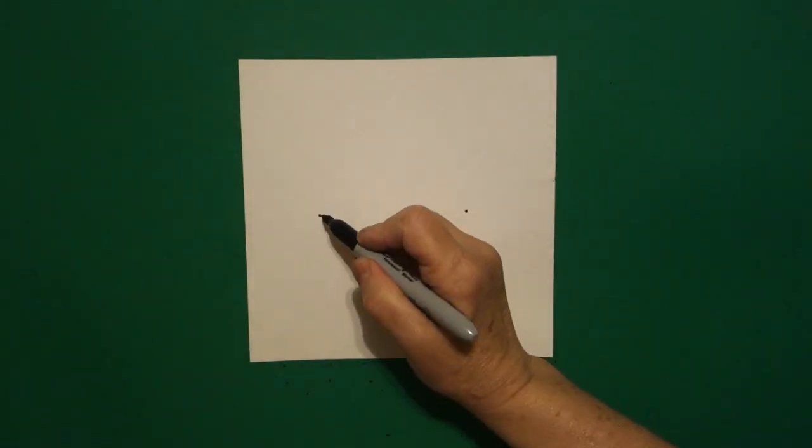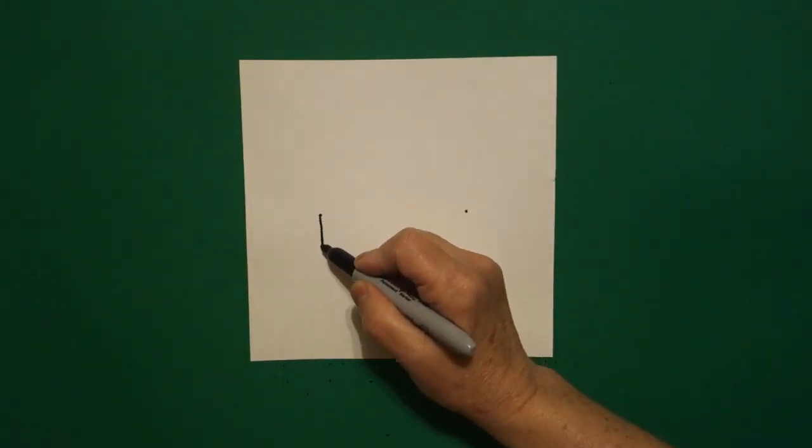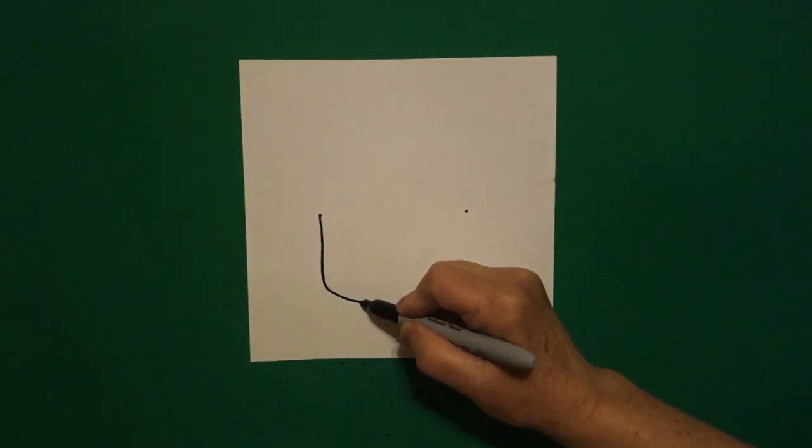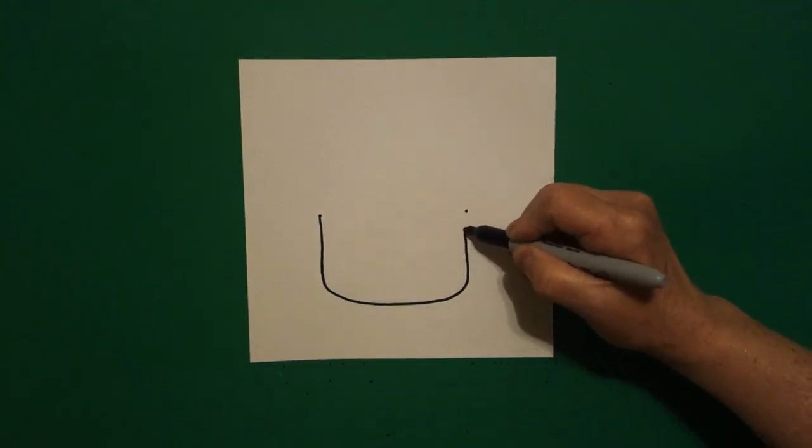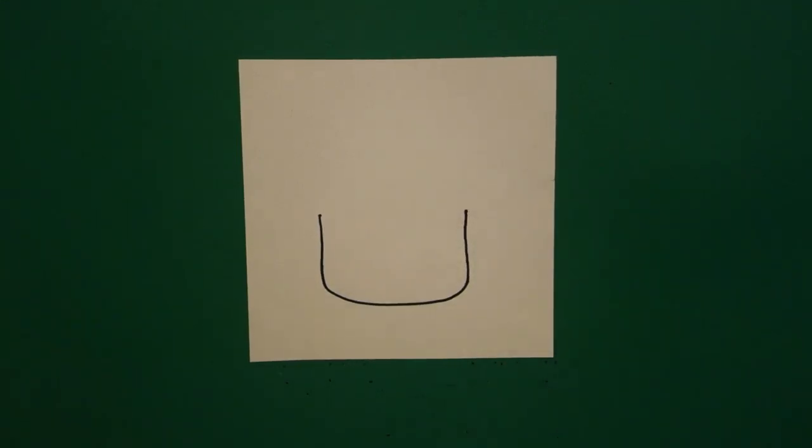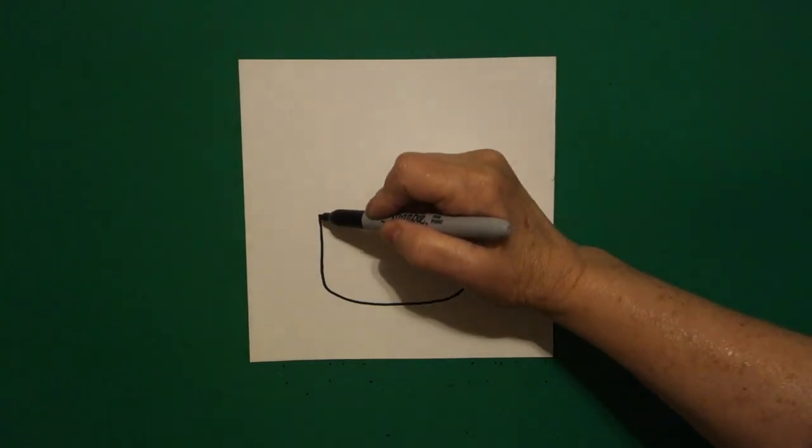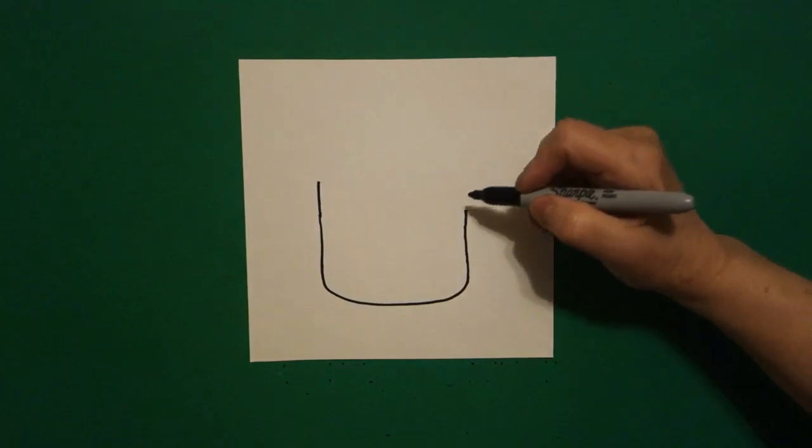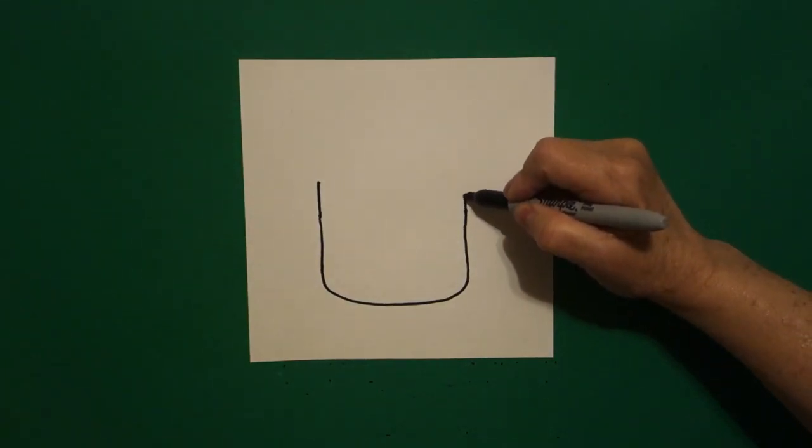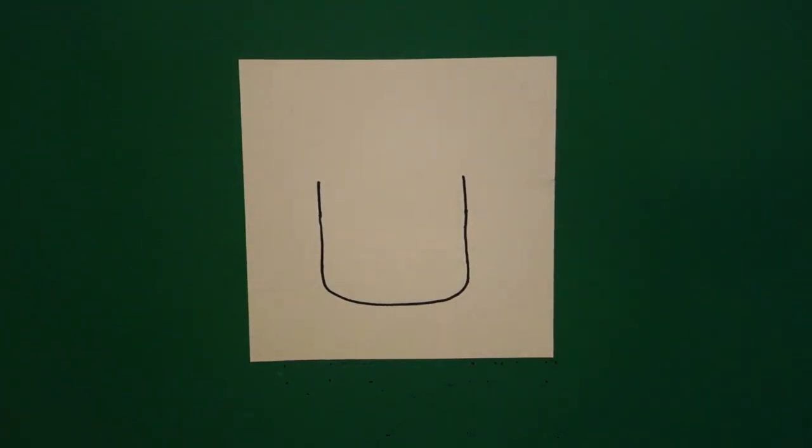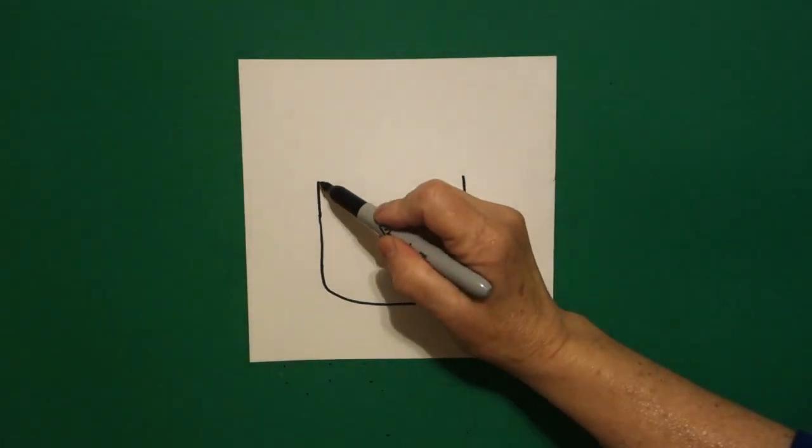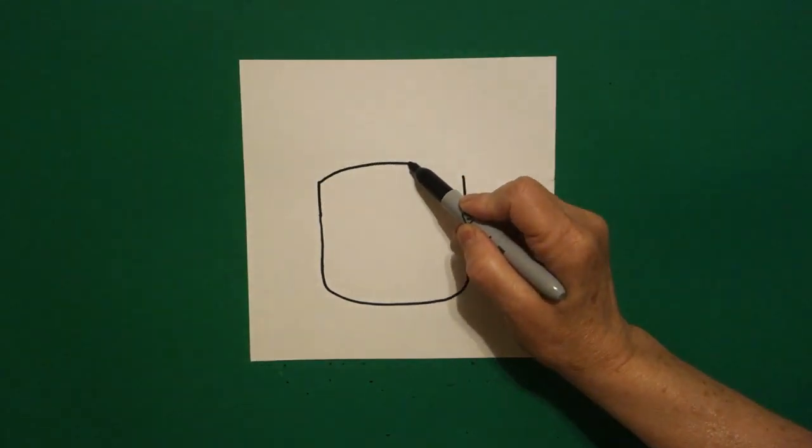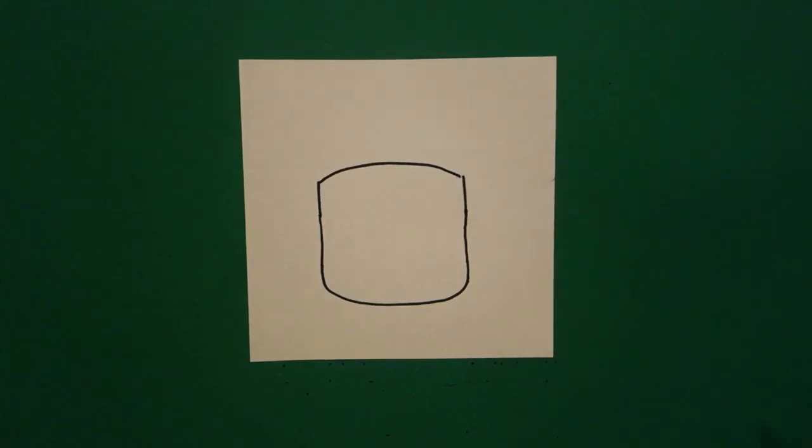I come back to the left and I draw a straight line down, curve line over, straight line up, connect. I come back to the left and I'm going to extend that straight line up on the left, and now straight line up on the right. I come back to the left and I'm going to draw a slightly curved line over, and connect.